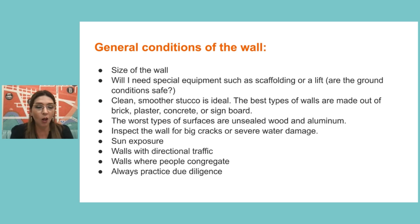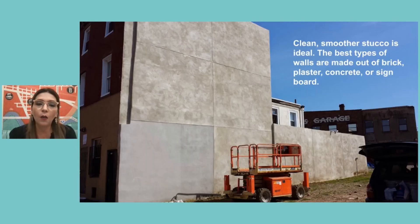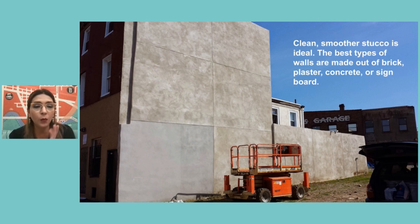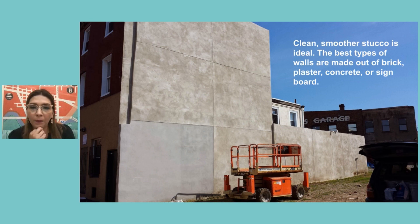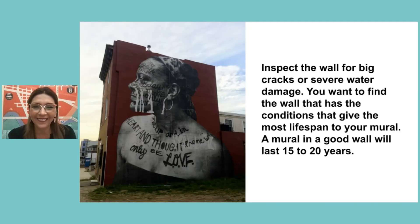Inspect the wall for cracks and severe water damage — if I see water damage, I stay away. A north-facing wall is ideal. Walls with directional traffic and where people congregate, such as parks, are great. Always practice due diligence. This is a wall I collaborated with two other artists on — it's a clean, smooth stucco, ideal. The concrete is smooth with no visible water damage.